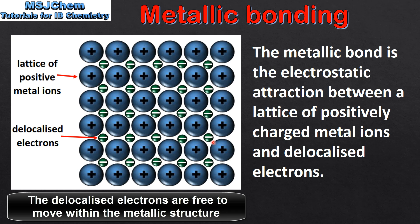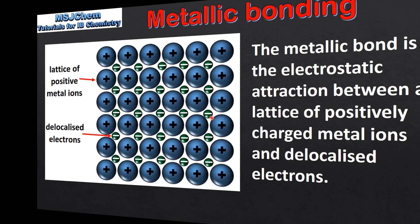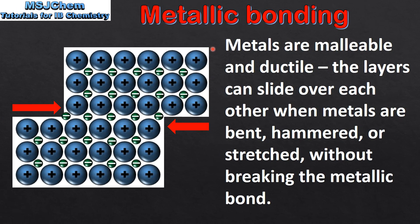These delocalized electrons within the metallic structure allow metals to conduct heat and electricity. They also reflect light, making metals shiny. As we saw earlier, metals are malleable and ductile — they can be bent into shape and drawn into wires. This is because the layers can slide over each other when metals are bent, hammered, or stretched without breaking the metallic bond.